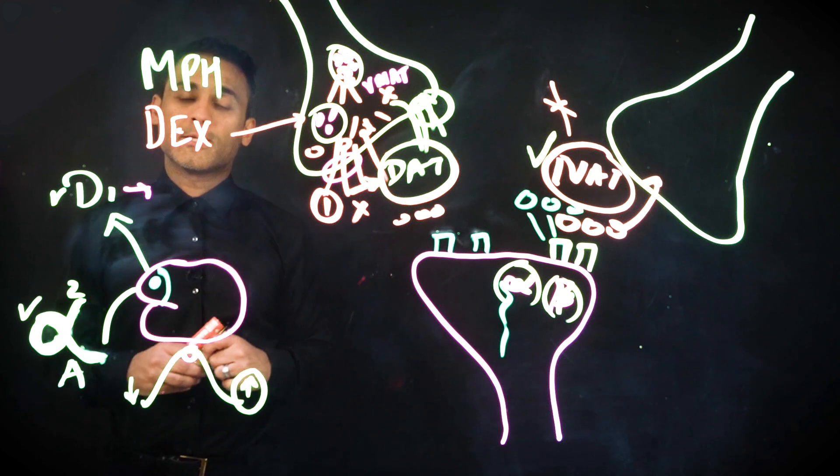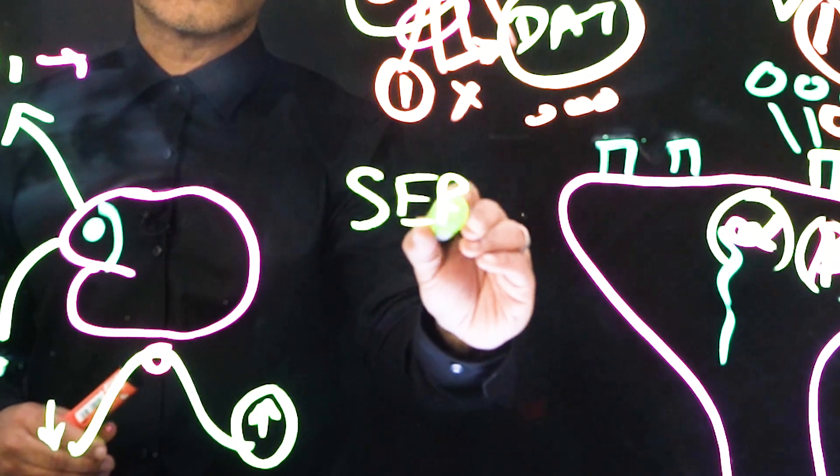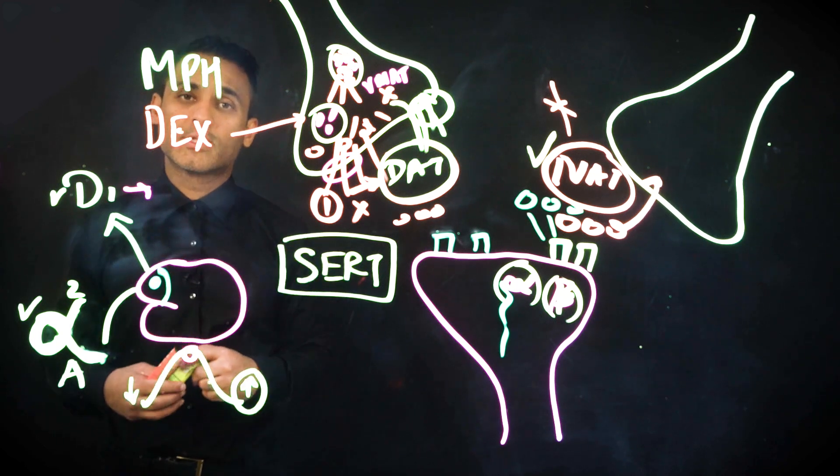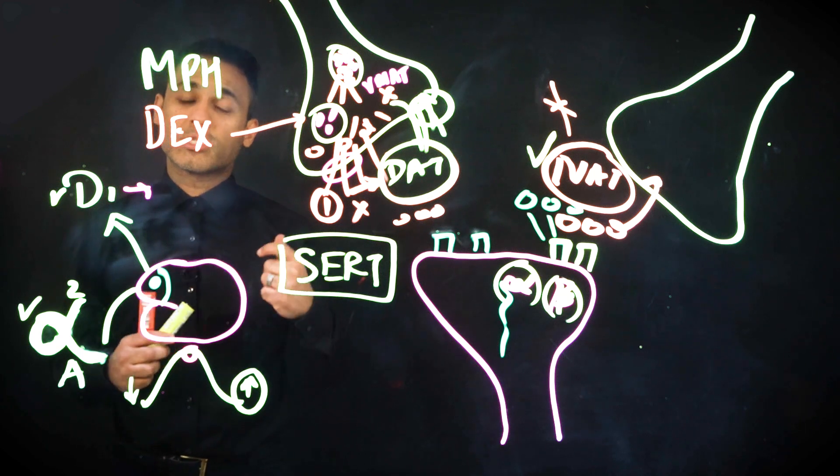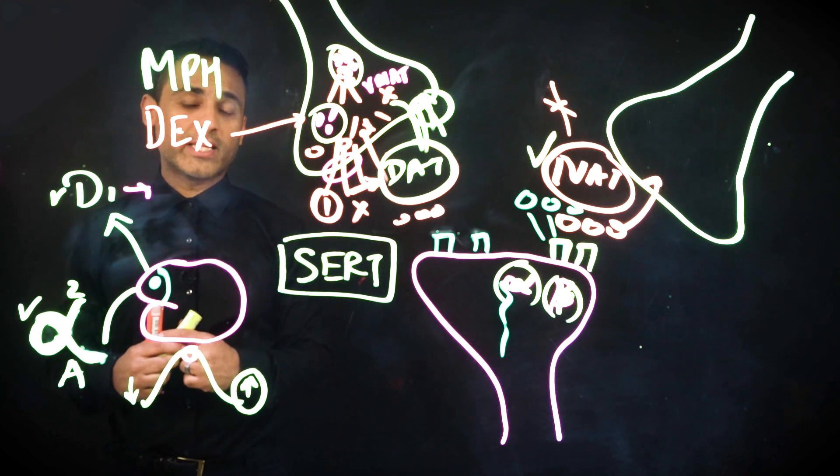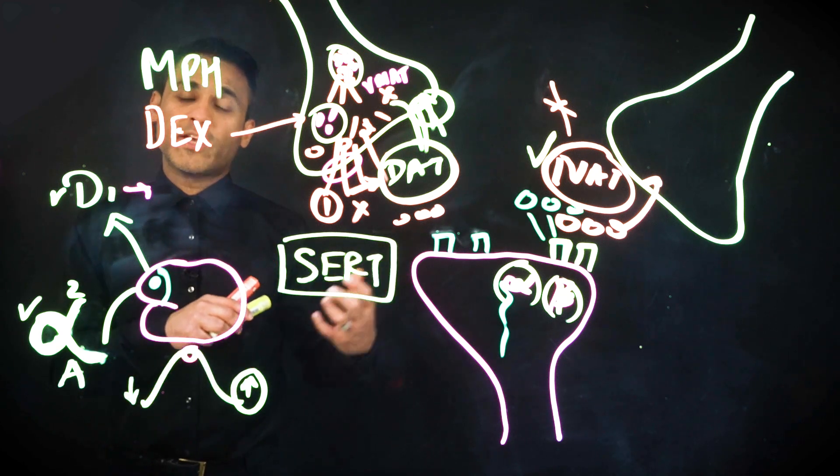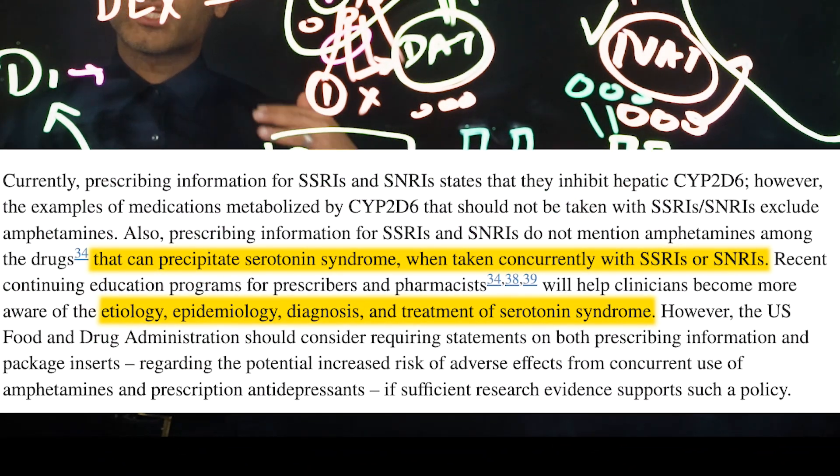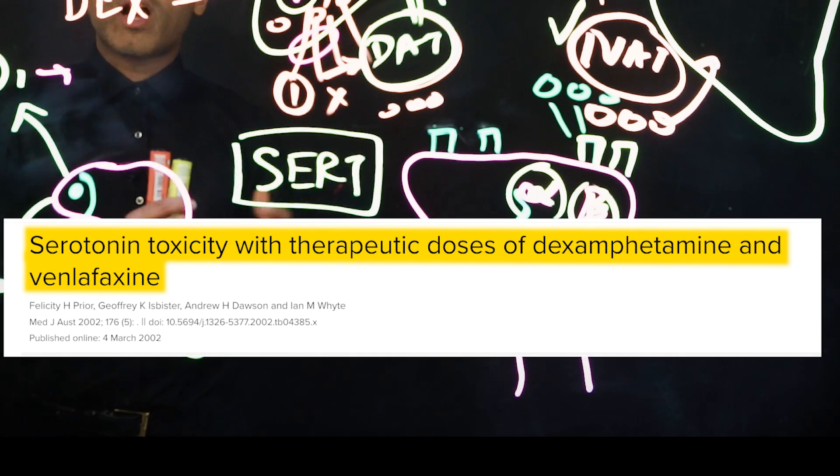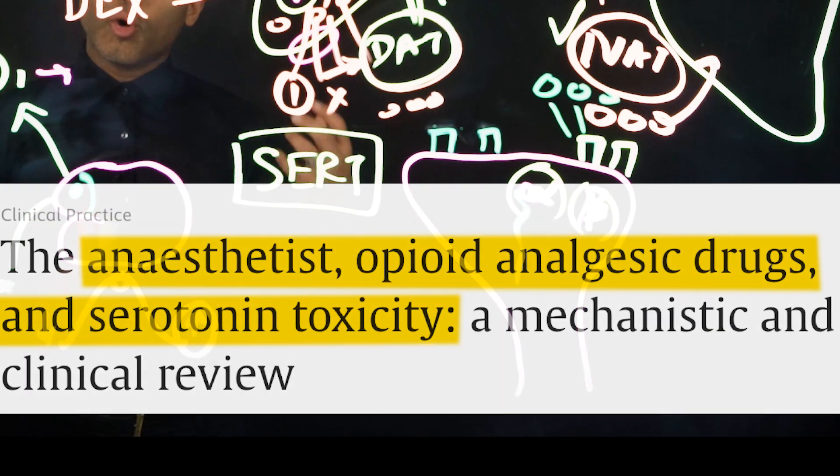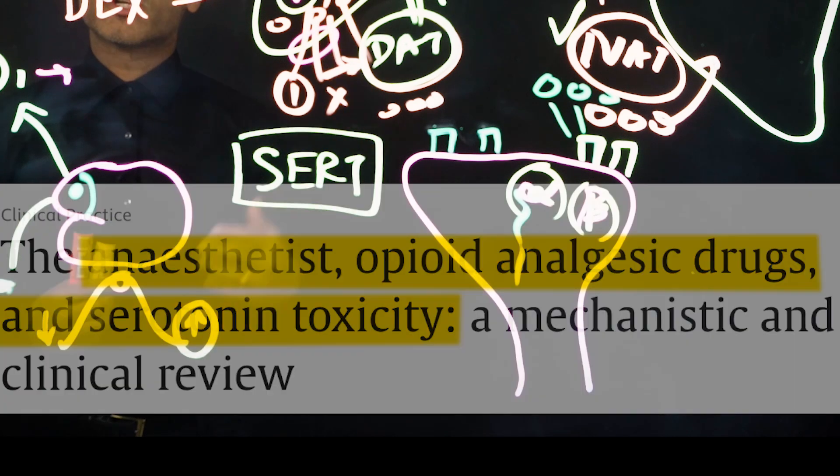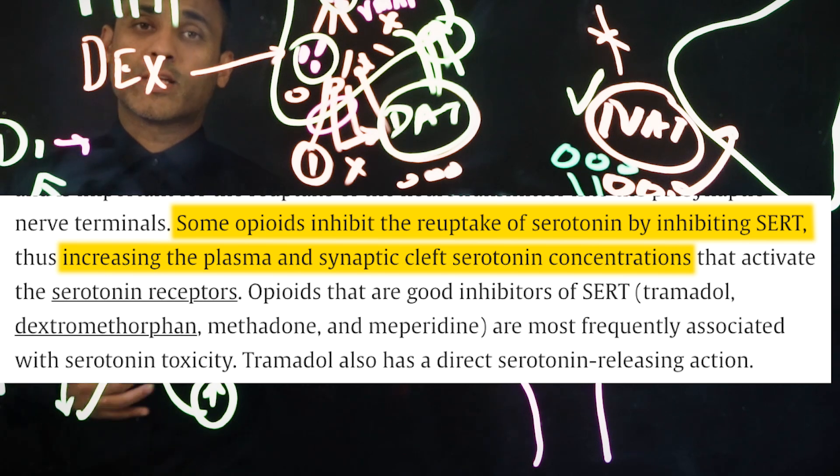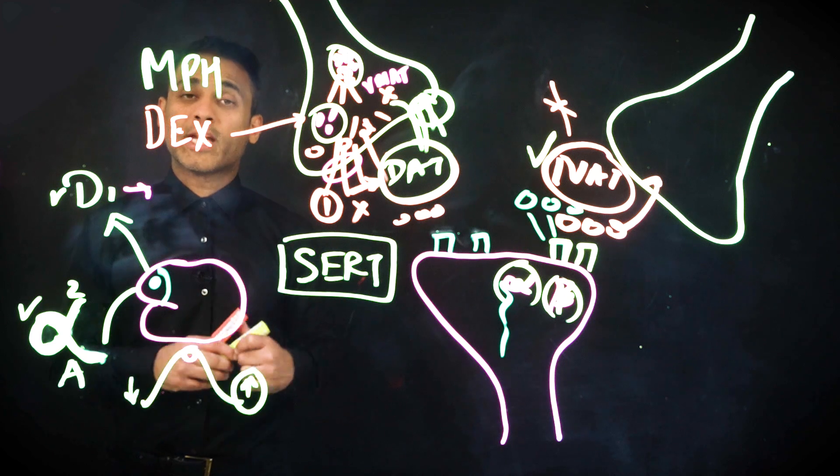But dexamphetamine has a third property, and that is blockade of SIRT as well. So just like an SSRI or an SNRI, it will block SIRT and increase serotonin. Why is this relevant? You might have noticed that dexamphetamine in some individuals is a much more activating agent than methylphenidate. This property can result in serotonergic activation or even serotonergic syndromes when combined with SSRIs in some individuals, particularly SSRIs at high doses. Caution is to be advised when you prescribe this with certain opioids as well, because opioids, in some cases, some of them have serotonergic potentiation effects. So please look at the interactions of dexamphetamine because they are more significant compared to methylphenidate because of this SIRT blockade property.